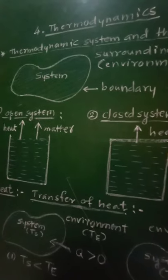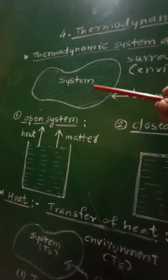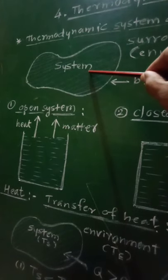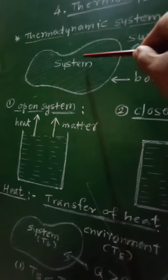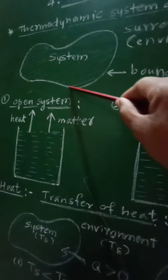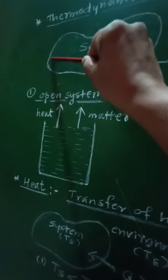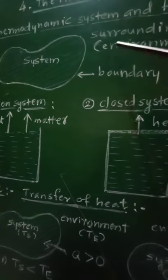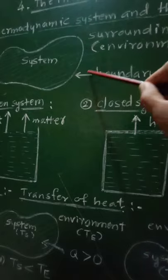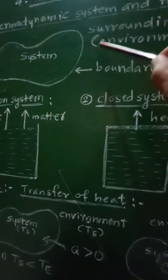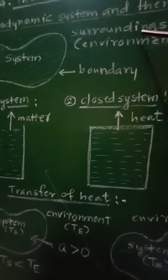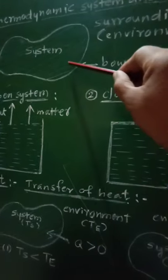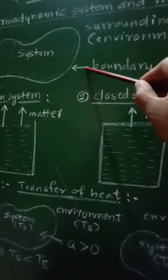For example, suppose water is filled in a vessel — this will represent the system. The vessel acts as the boundary between the system and the surrounding space, which is the environment. So between the surrounding or environment and the system, there will be this boundary.